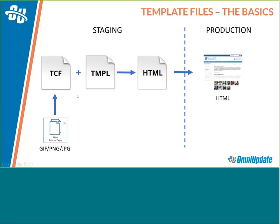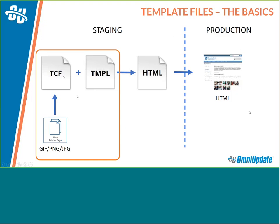So really, the way it works inside of OU Campus: you click the New button — it gives you a list of thumbnails. You click the thumbnail — it opens a form generated by our TCF. You fill out the form. The data gets passed into the template file, our generic backbone. And then the combination of user data plus the generic backbone gives us our end result. The HTML file could be literally anything — a text file, a CSS file, JavaScript. What really matters is that the TMPL is just creating a file on the staging server, and from there that file is its own thing.